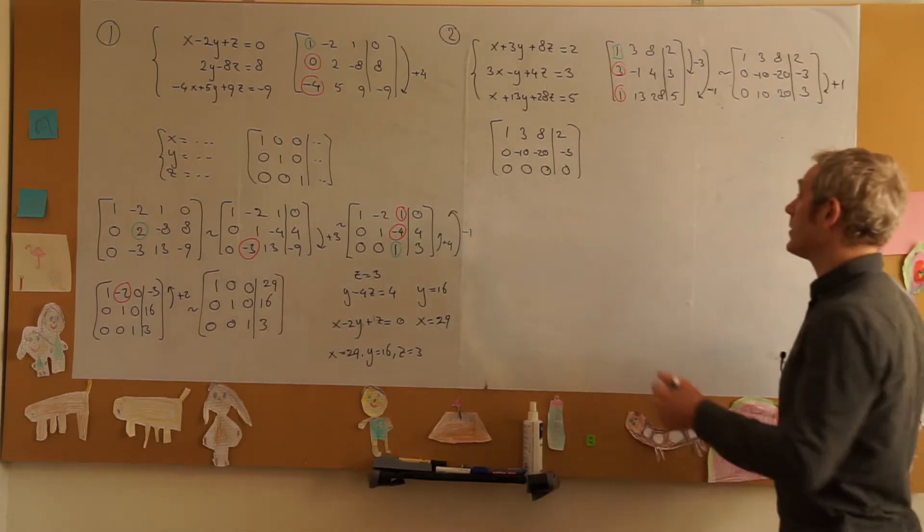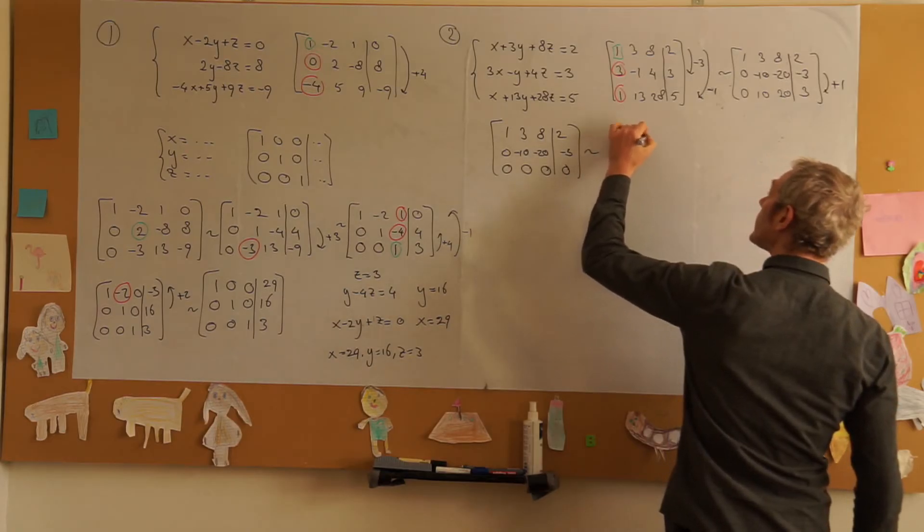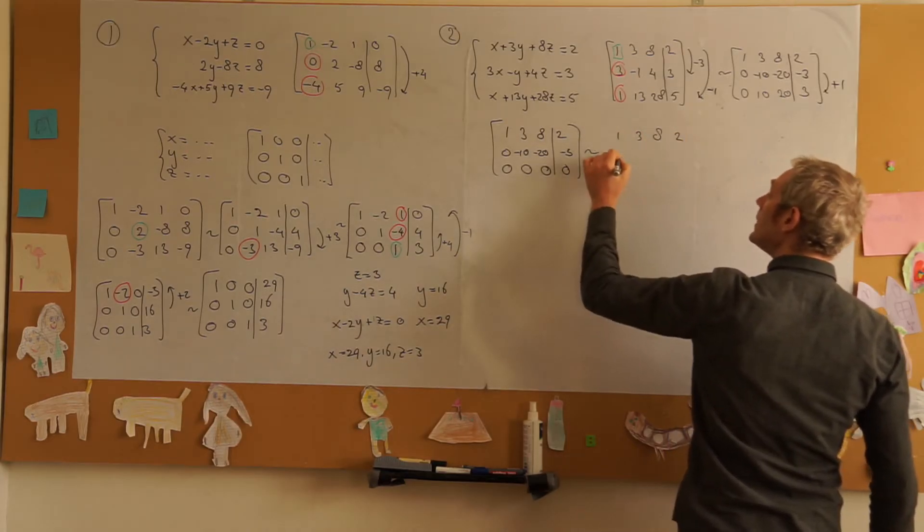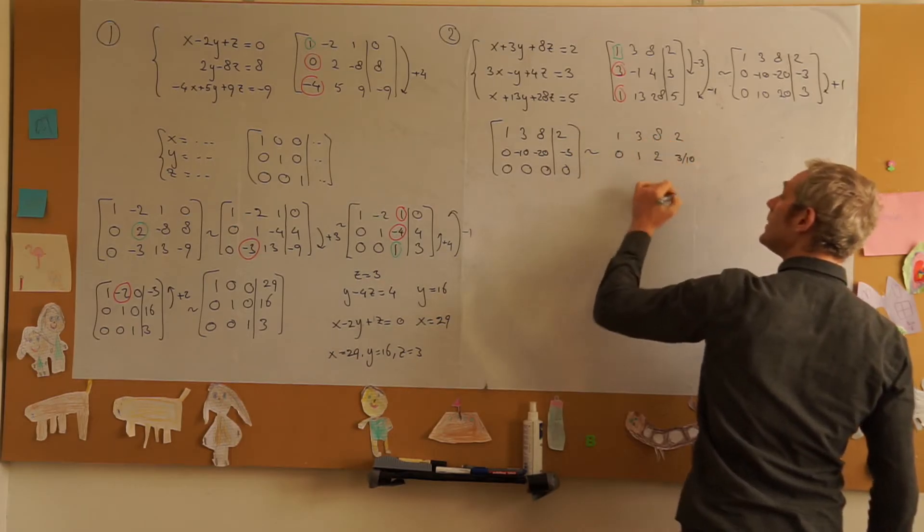Well we can continue finding the solution. So the next step is I will divide the second row by minus 10 now. 1, 3, 8, 2; 0, 1, 2, 3 divided by 10.